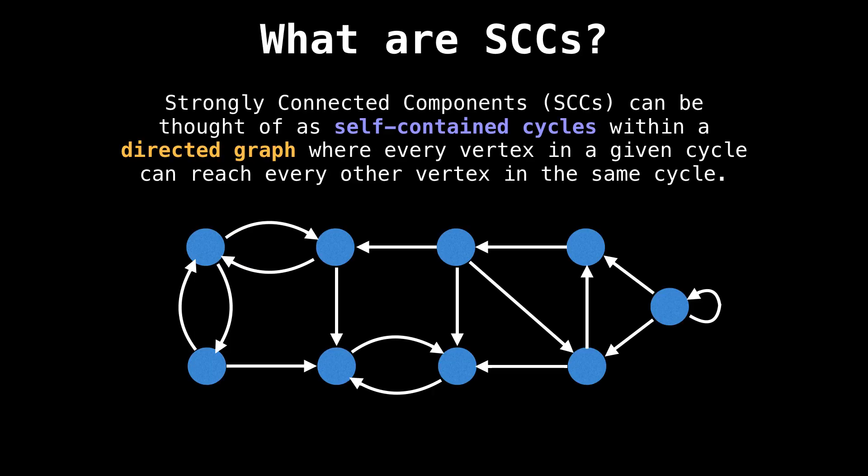So what are strongly connected components, or SCCs? I like to think of them as self-contained cycles within a directed graph, where for every vertex in a given cycle, you can reach every other vertex in the same cycle. For example, in the graph below, there are four strongly connected components.